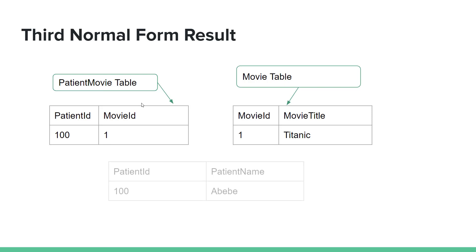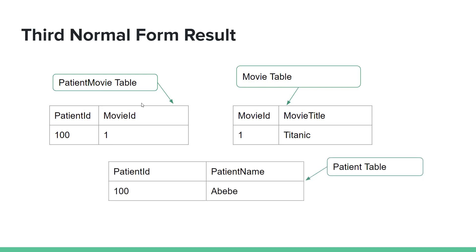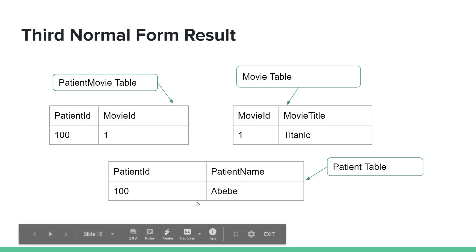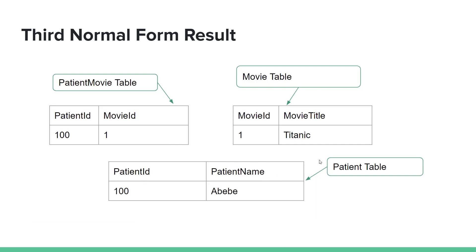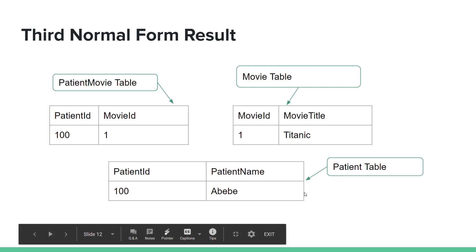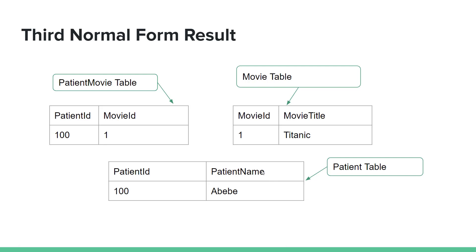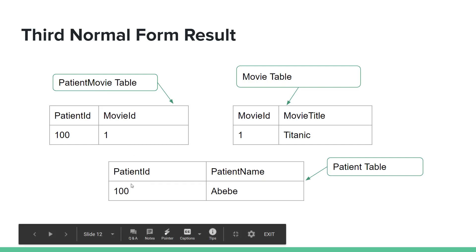On the next slide, if you are using the patient ID, you can find the patient information. The patient movie is a child table. The patient ID links to the movie ID and the movie table.